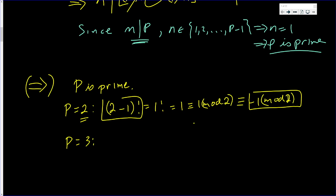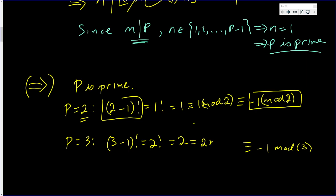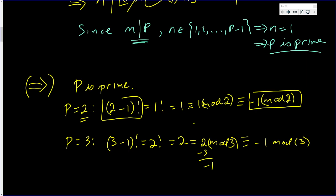When p is 3, we want to show that p minus 1 factorial is congruent to negative 1 mod 3. Well, 3 minus 1 is 2, and 2 factorial is 2, which equals 2 mod 3. We have every right to subtract 3 without changing the value in mod 3, since 3 is 0. So 2 minus 3 is negative 1. That's just what we needed. We proved it for primes 2 and 3.